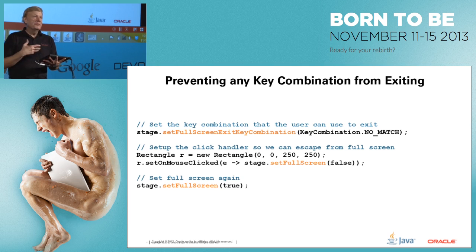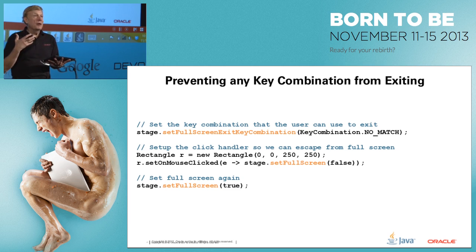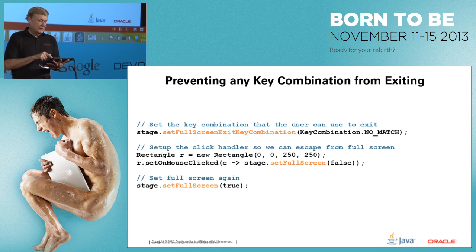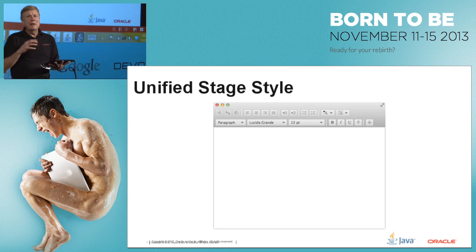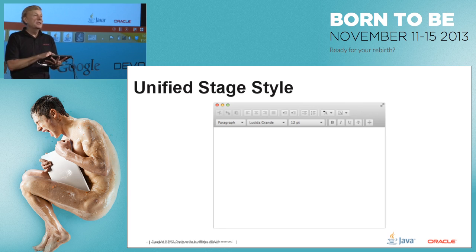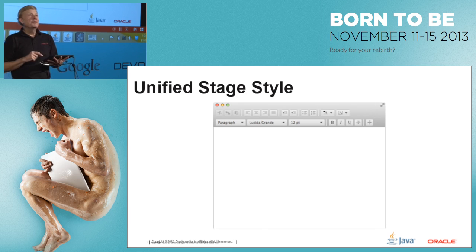If you want to prevent them altogether from exiting full screen via keystroke, set the key combination to KeyCombination.NO_MATCH. That way no keystroke will leave full screen. Typically you still want to give them a back door — in this case, clicking the rectangle — to get out.